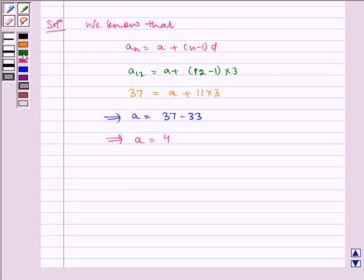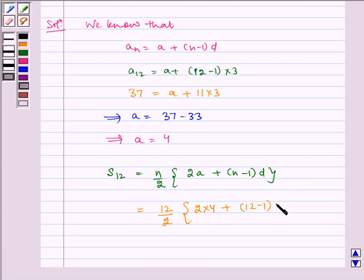Now, using this value of A, let us find the sum. That is S12, which is equal to N by 2 multiplied by 2A plus N minus 1, D, which is equal to 12 by 2, 2 multiplied by 4 plus 12 minus 1, and D is 3.